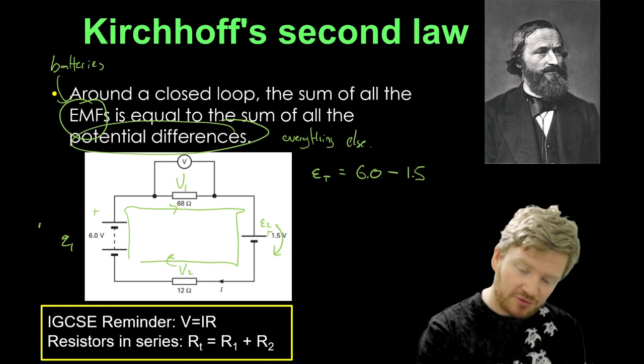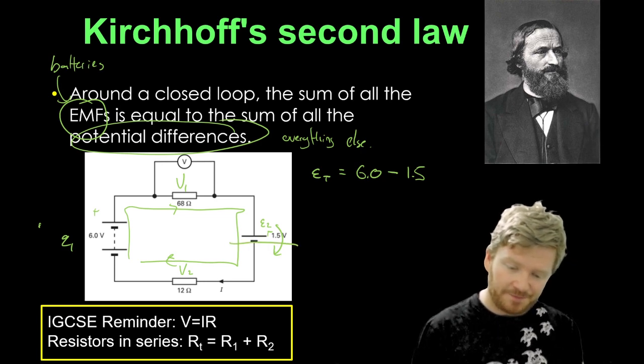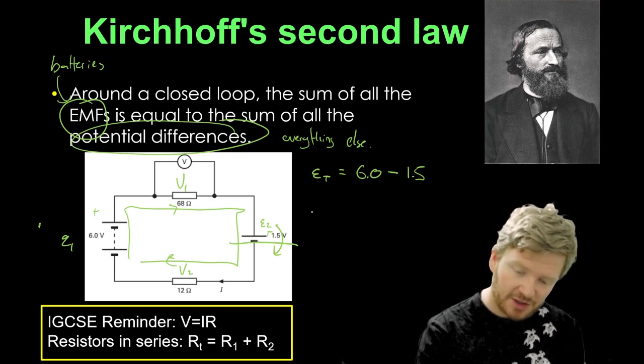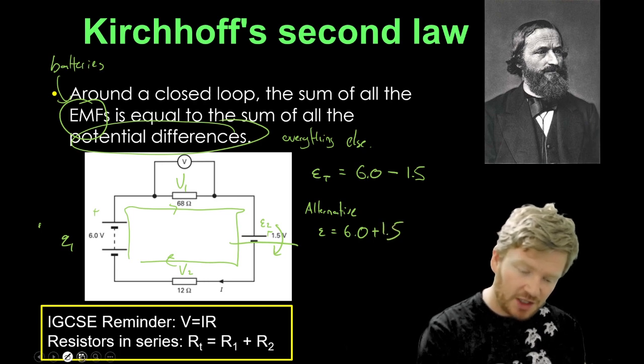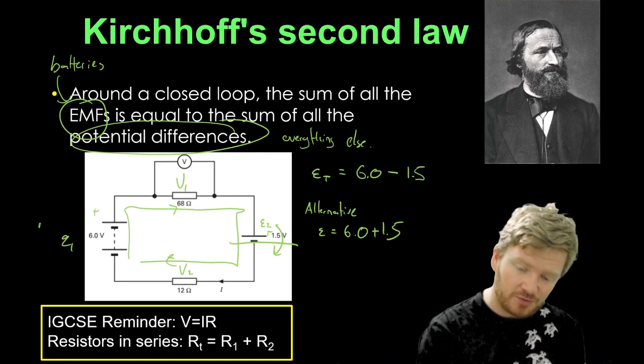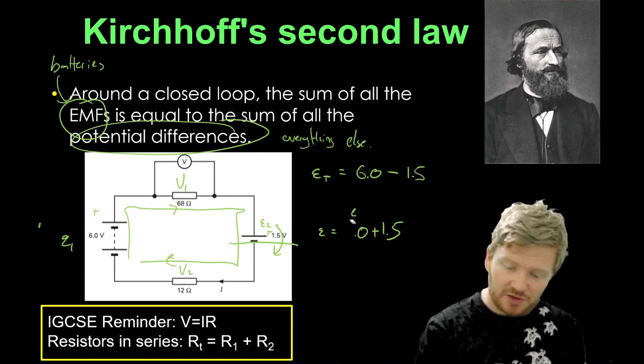So what I can say is that the total EMF is actually equal to 6.0 volts take away 1.5 volts because they're acting in opposite directions. If I flip this around and make this one bigger, then it will do work the whole way around. And then I can say in my alternative universe, then the total EMF will be equal to 6.0 plus 1.5. Maybe that's a bit of a mean question for me to start with, but oh well.